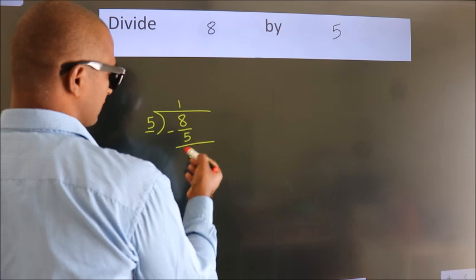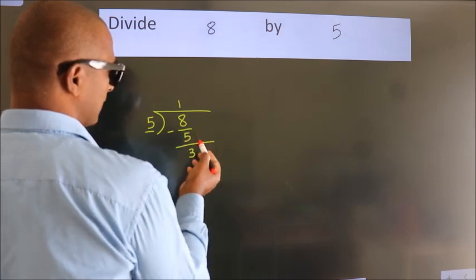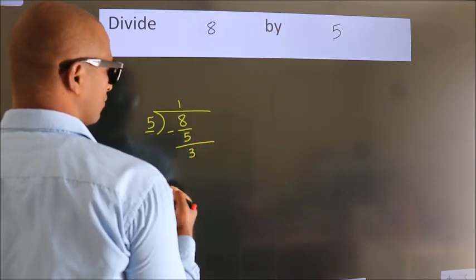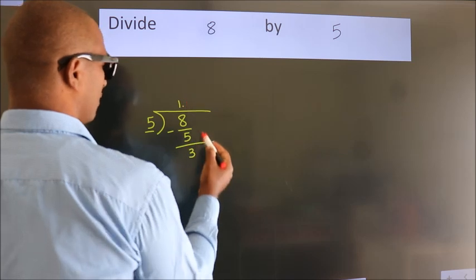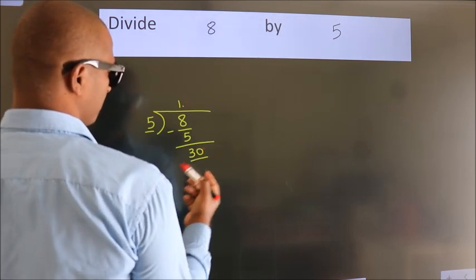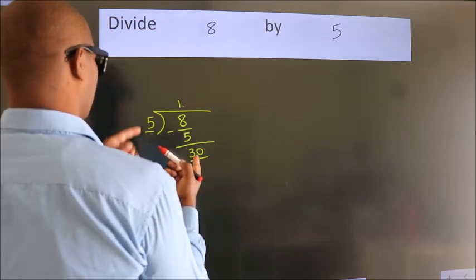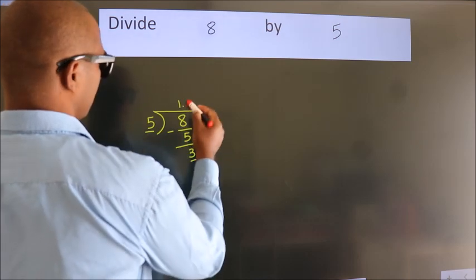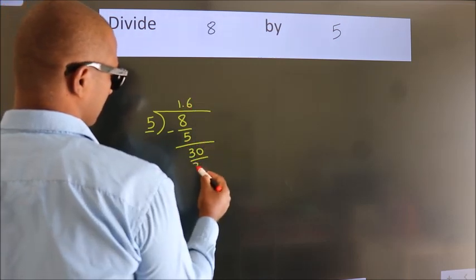After this, no more numbers to bring down. So what we do is we put a dot and take 0, making 30. When do we get 30 in the 5 table? 5 times 6 is 30.